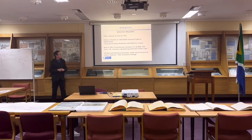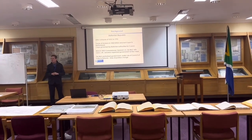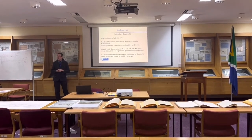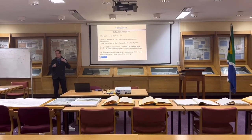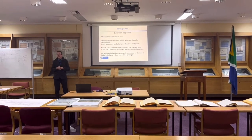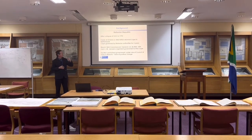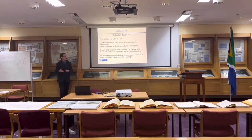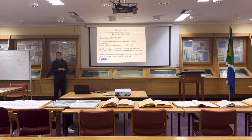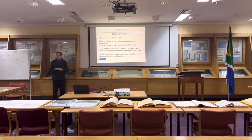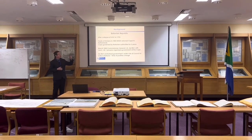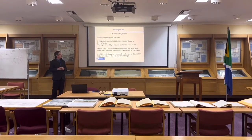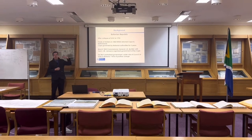In 1795, the Dutch East India Company collapsed — they became financially bankrupt and could no longer govern as a company or governing system. They came to a fall, and the first British occupation of the Cape took place. In 1795, the British conquered the Cape.